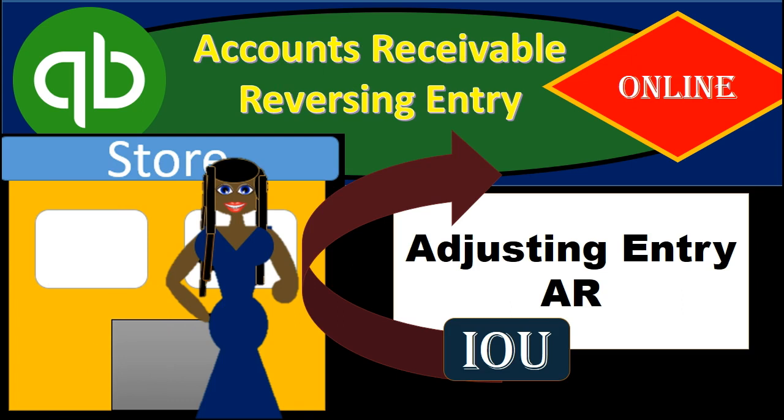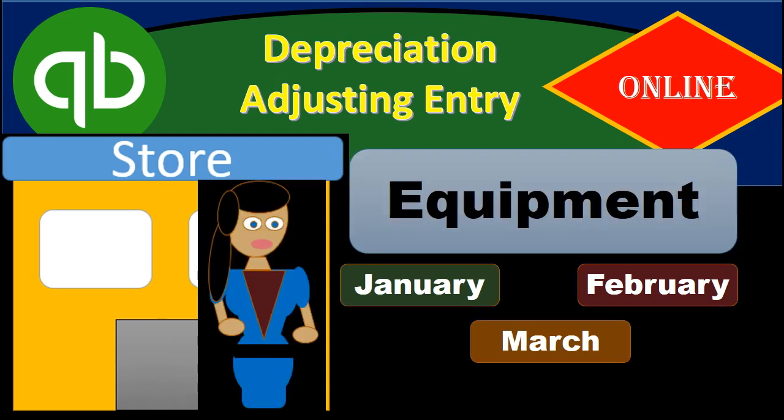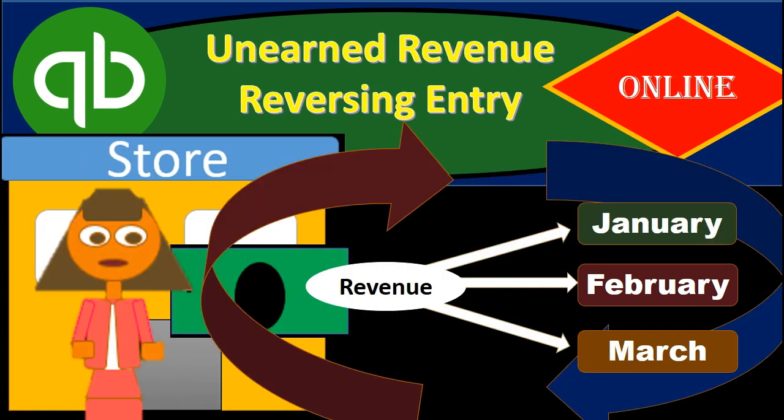We'll have the accounts receivable reversing entry, which will reverse the last entry for the first time period in the next month. We'll have a prepaid insurance adjusting entry, a depreciation adjusting entry, and an unearned revenue adjusting entry.